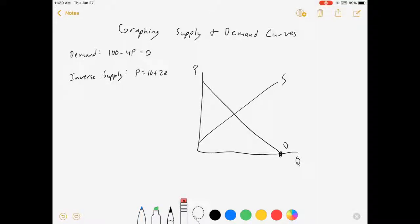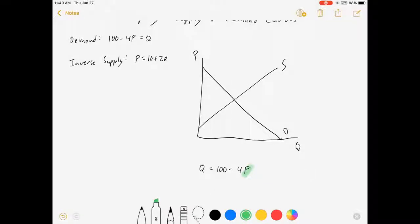And so to do that, I'm going to take my demand curve and set P equal to zero. Let's see, Q equals 100 minus 4P. Substitute that thing and make it equal to zero. Q equals 100 minus 4 times zero equals 100. The intercept here is 100.